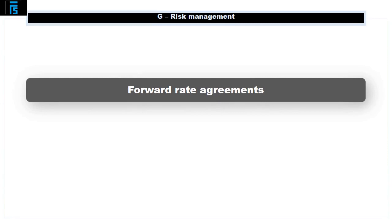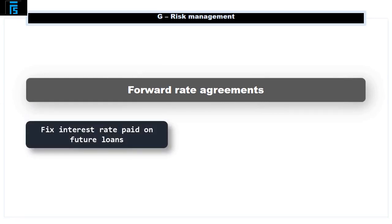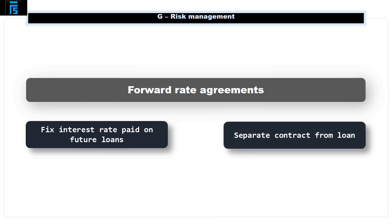Forward rate agreements. A forward rate agreement, or FRA, enables a company to fix the interest rate it will pay or receive on loans it is planning to take out in the future. It is very similar in terms of what it achieves to the forward contract described in the exchange rate risk presentation. However, the mechanics as to how it achieves the outcome is very different. The major difference is that the FRA is a separate contract from the loan itself, i.e. the FRA is not a loan.